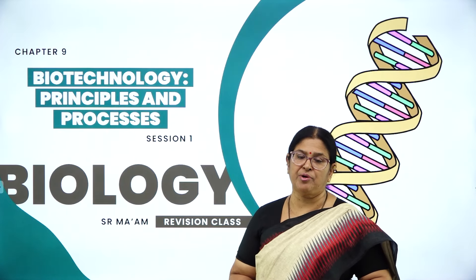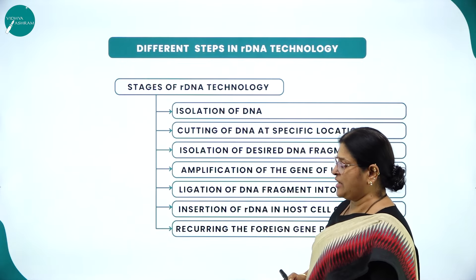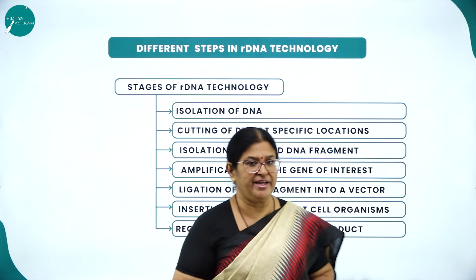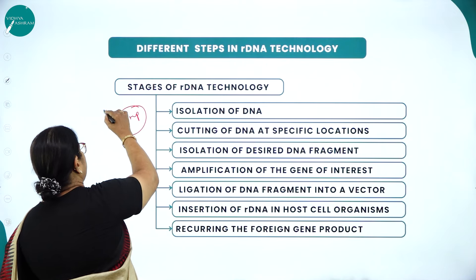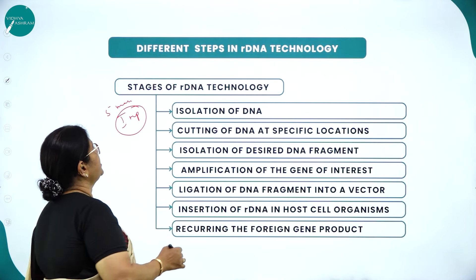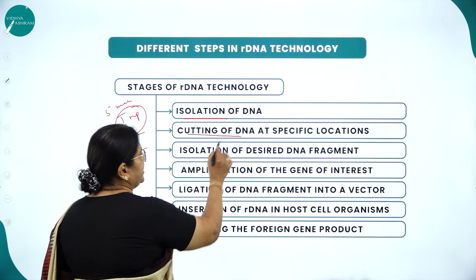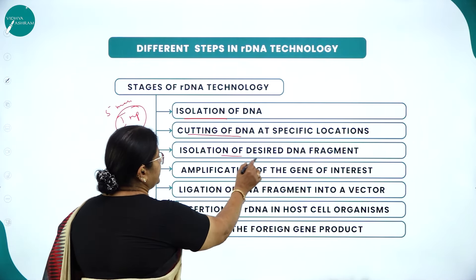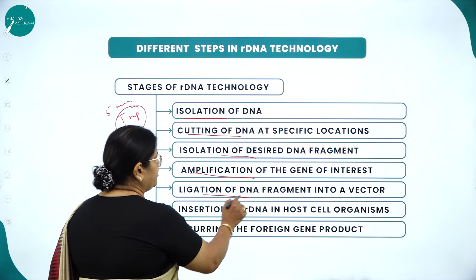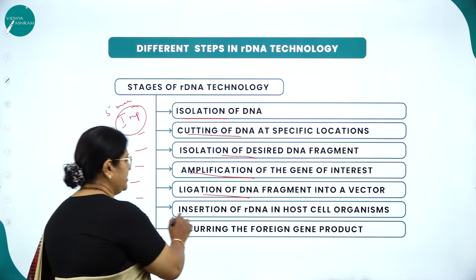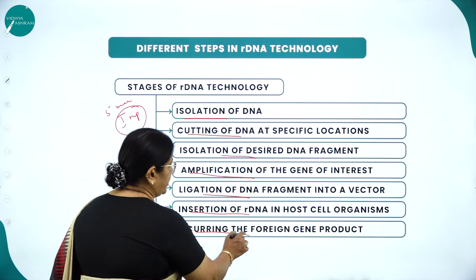Moving on to the important concepts with a flow chart: the different steps in recombinant DNA technology. The stages are: isolation of DNA, cutting of DNA at specific locations, isolation of desired DNA fragment, amplification of the gene of interest, ligation of DNA fragment into a vector, insertion of R-DNA into host cell organisms, and recovering the foreign gene product.